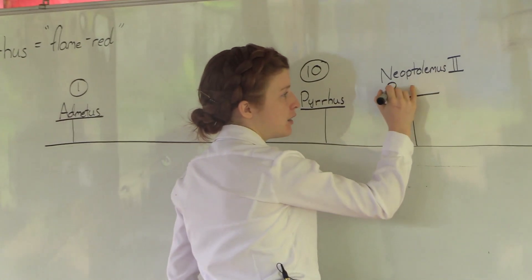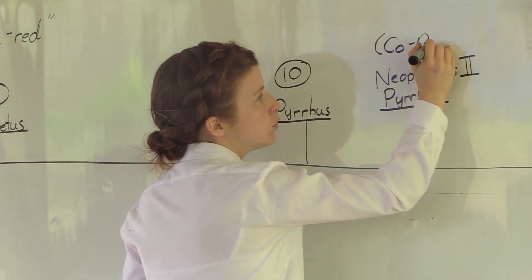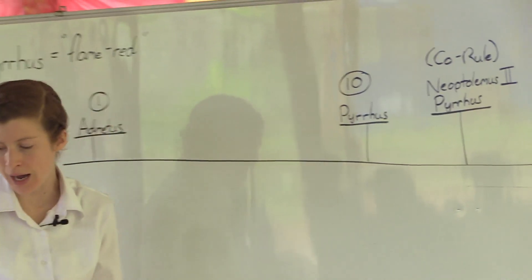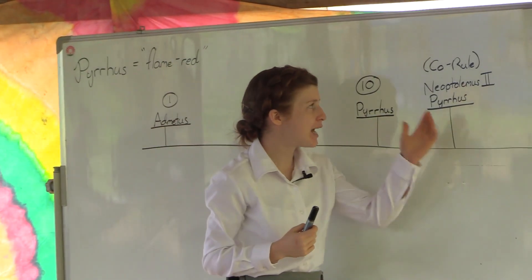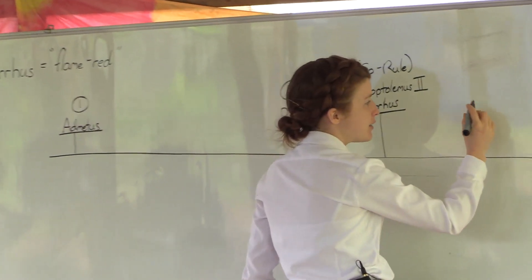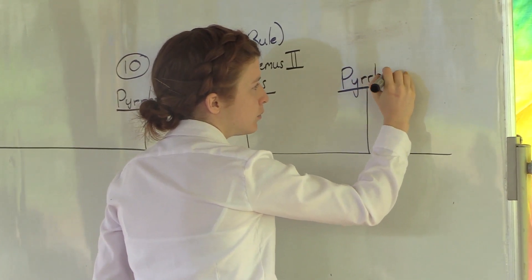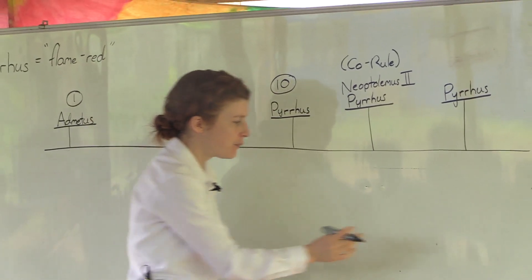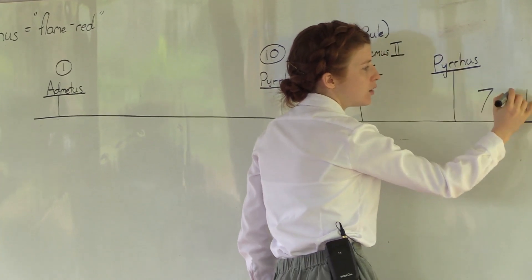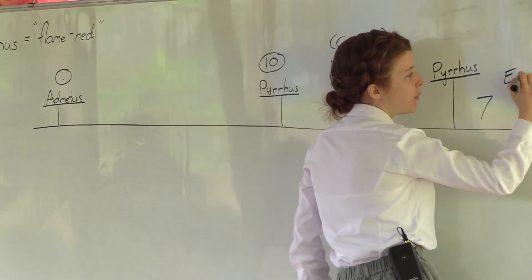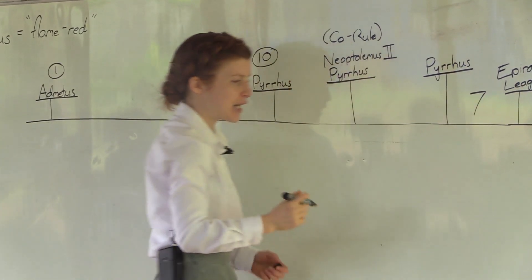So Neoptolemus the second and Pyrrhus co-ruled. You had two kings at the same time. Over the course of time he had Neoptolemus killed and he returned as the sole and only king again of Epirus. If you trace the kings following him, you have seven more leaders before the nation of Epirus is ruled by the Epirote League, a league of tribes or of nation states.